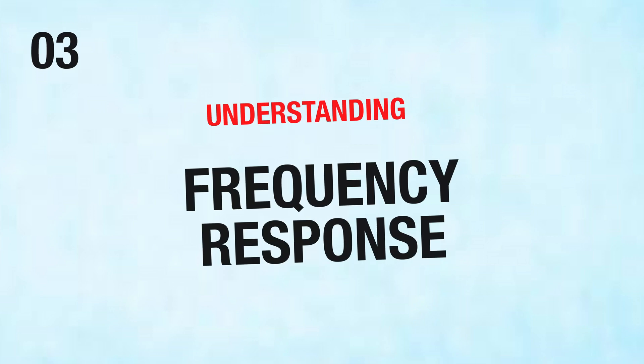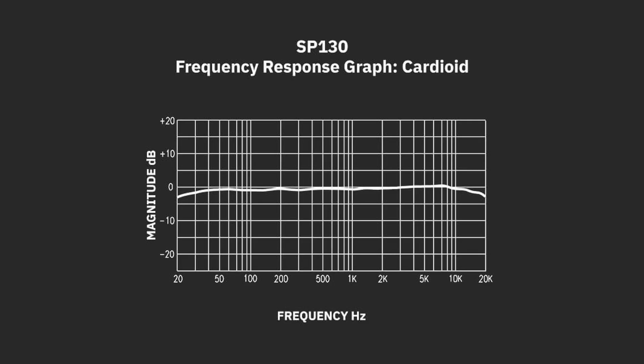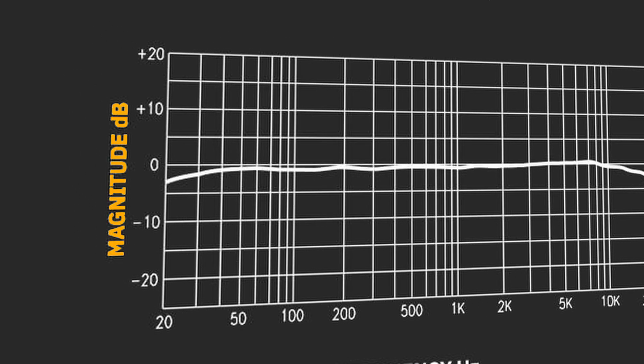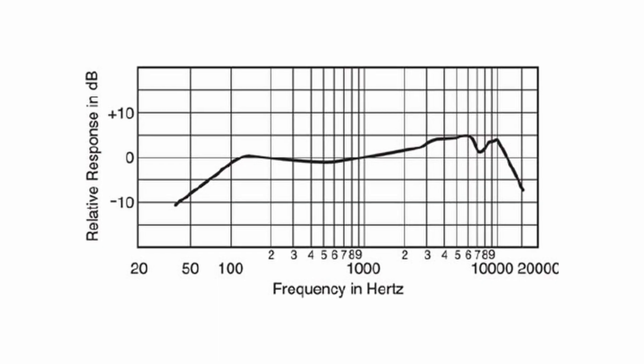The frequency response of a microphone is a critical characteristic that defines how it captures different frequencies of a sound, typically represented on a graph. The x-axis shows frequency in hertz, and the y-axis shows the microphone's output levels in decibels. A flat frequency response indicates that a microphone reproduces all frequencies uniformly, making it ideal for accurate sound capture. Peaks indicate certain frequencies are accentuated, while dips indicate attenuation. For example, a boost in the high frequencies might brighten up vocals, while a dip in the low frequencies might help reduce unwanted rumble.